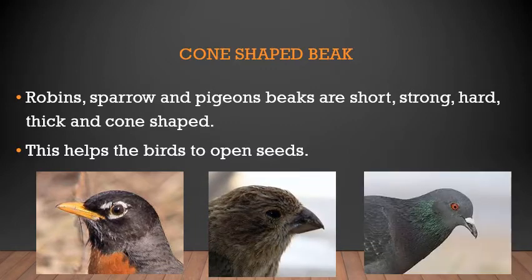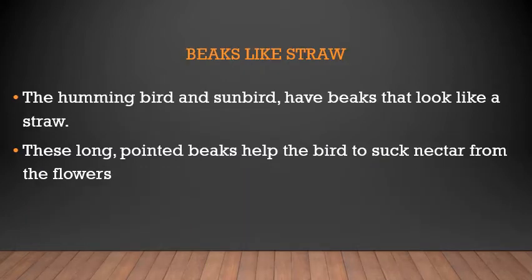The robin, sparrow, and pigeon all have the same kind of cone-shaped beak. Their beaks are short, strong, hard, thick, and cone-shaped, which helps them to open and eat seeds from different fruits or rice.